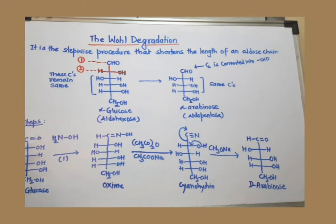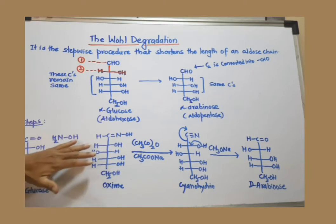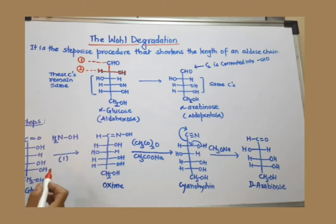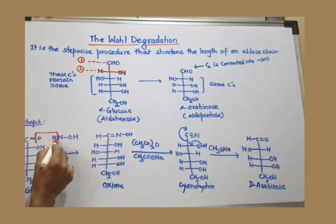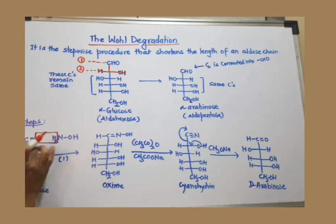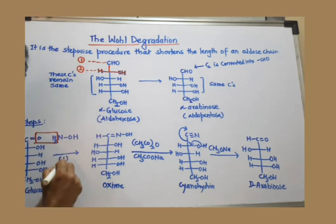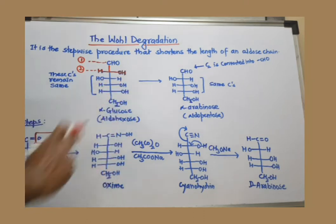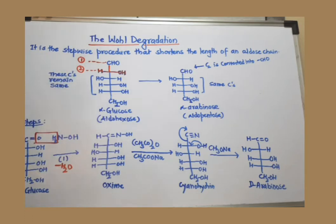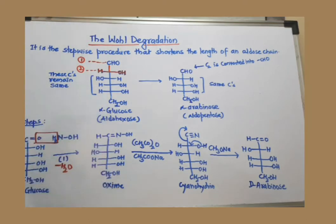The first step: take the monosaccharide — here glucose — and treat it with hydroxylamine. This is the well-known condensation reaction following nucleophilic addition, as discussed in aldehydes and ketones. The hydroxylamine reacts with the carbonyl carbon, water is removed, and they join together. This condensation reaction produces an oxime: H-C=N-OH. So the first step is a condensation reaction where an oxime is produced.